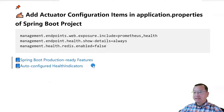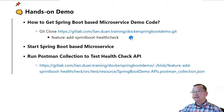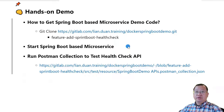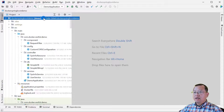We will move to the next topic: hands-on demo. First, how to get the Spring Boot based microservice demo code — it is simple. Clone the source code from my GitLab repository and then switch to the 'feature-add-spring-boot-health-check' branch. After you get the source code, run the Spring Boot microservice locally. I use IntelliJ IDEA, or you can use another IDE you are familiar with. Select the project and start it.